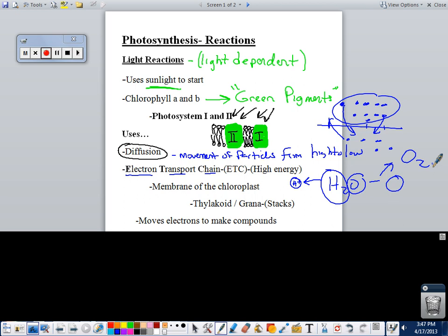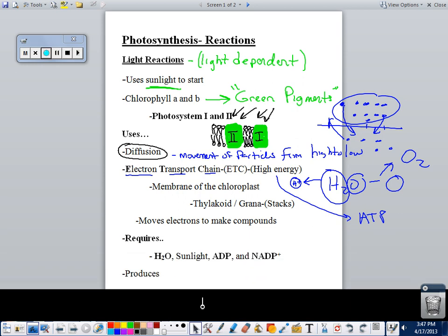After this electron transport chain has produced a large amount of ATP, ATP is then used to make, and other products are used to make glucose. But this process, the light reactions, they occur in the membrane of the chloroplast and the thylakoid and grana stacks. They move electrons to make compounds through the idea of diffusion. It requires H2O, sunlight, ADP, and NADP+. So it's breaking down H2O into O2 and getting hydrogen ions, but it's also using sunlight, ADP, and NADP+ to make this process complete.